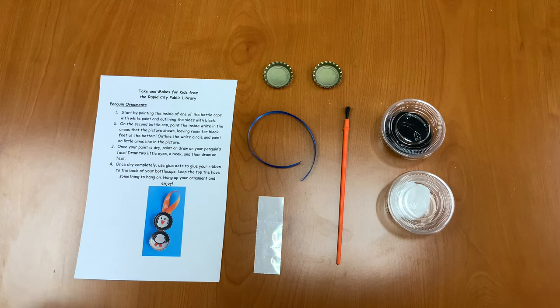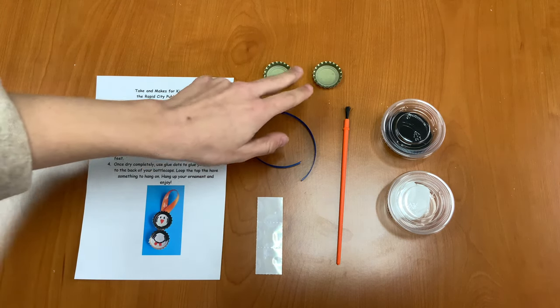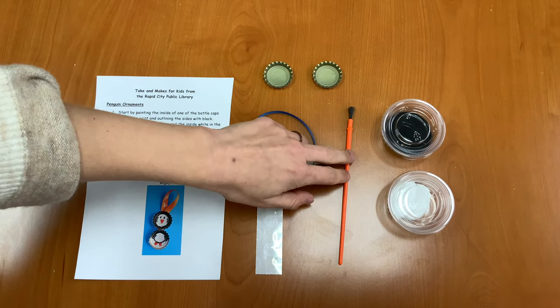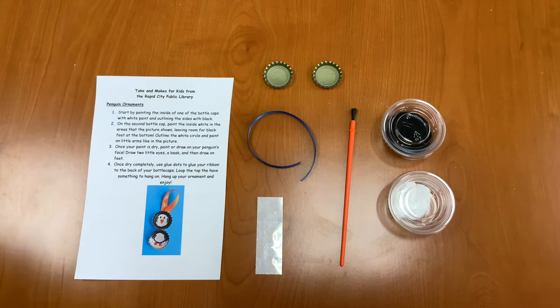In your Take and Make kit you should have some instructions, glue dots, a ribbon, two bottle caps, a paintbrush, some white paint, and some black paint. Let's get started.